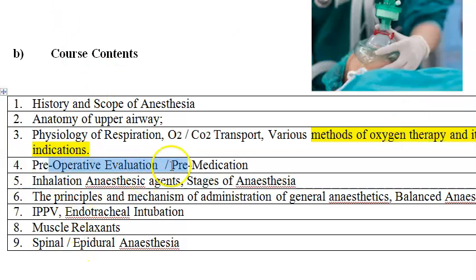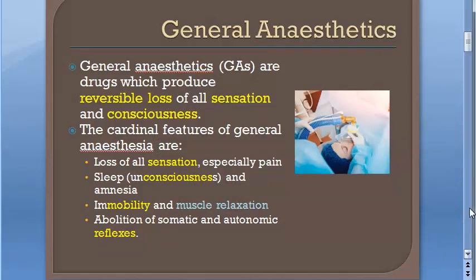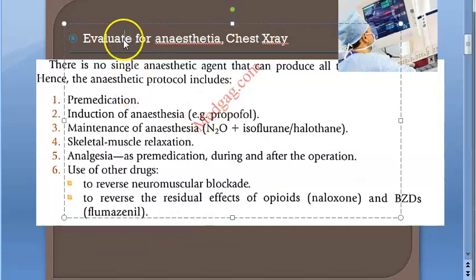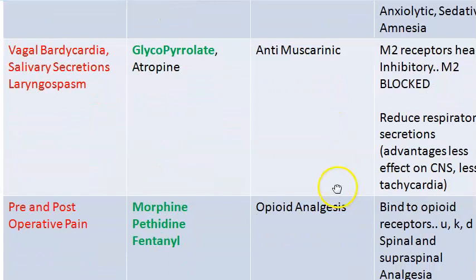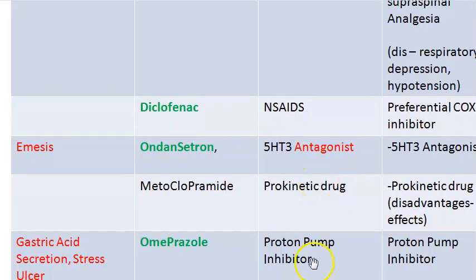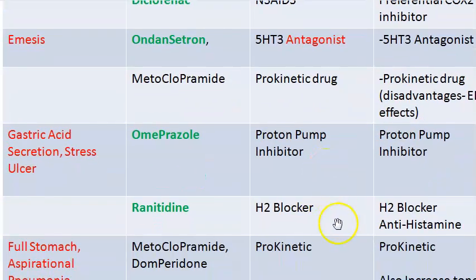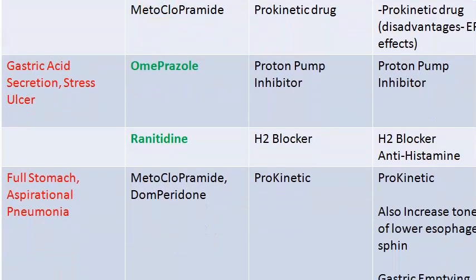Then pre-operative evaluation and pre-medication — this is important. You should first evaluate whether the person is eligible for anesthesia and what type. We have covered this in pharmacology. Pre-anesthetic medications include diazepam, glycopyrrolate, morphine, diclofenac, ondansetron, omeprazole for gastric acid, metoclopramide, ranitidine. So go and look at the pre-anesthetic medication videos.